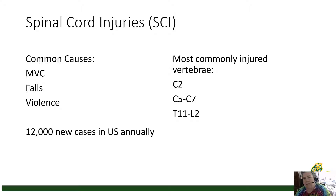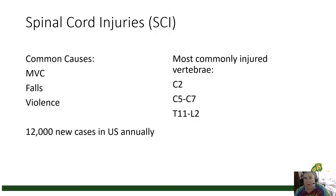Violence, including assaults and even assaults with weapons, can result in spinal cord injuries. For traumatic spinal cord injuries, the most commonly injured vertebrae are C2, very near the top of the spinal column, between C5 and C7, and then the lower thoracic vertebrae T11 and T12.